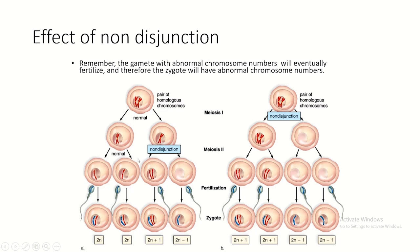In meiosis II non-disjunction, some gametes are normal and upon fertilization restore diploidy. But a gamete with an extra chromosome upon fertilization results in trisomy, and one missing a chromosome results in monosomy. If non-disjunction occurs in meiosis I, half the gametes have an extra copy and half are missing a copy, giving trisomy in half the zygotes and monosomy in the other half.